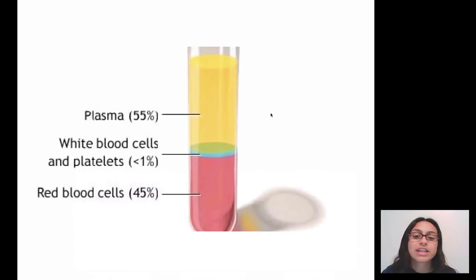All right, taking a look at all four components that we just looked at. Most of your blood, 55% of your blood is the plasma. Less than 1% is your white blood cells and your platelets, and then 45% of your blood is the red blood cells.